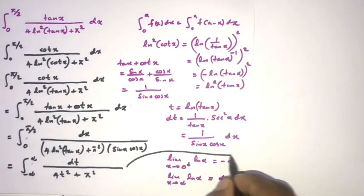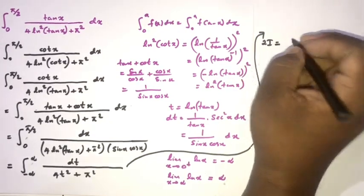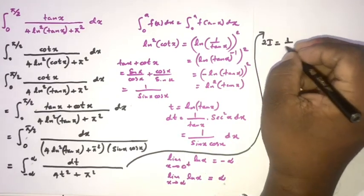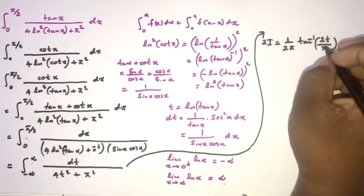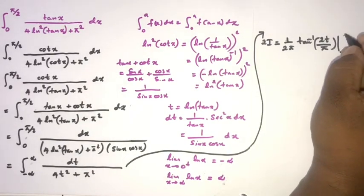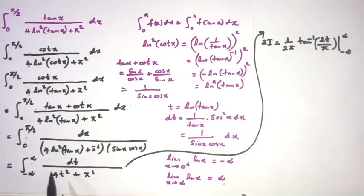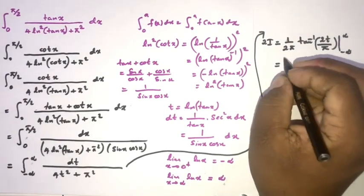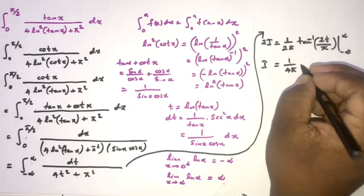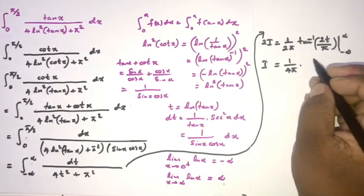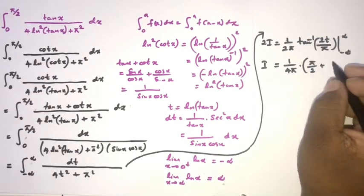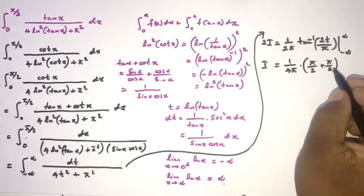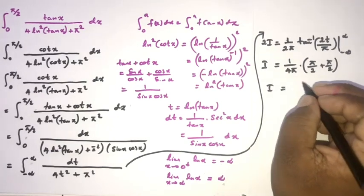This is a standard arctan integral. We get 2I = [1/(2π)]·arctan(2t/π) evaluated from −∞ to ∞. So I = [1/(4π)]·[arctan(∞) − arctan(−∞)] = [1/(4π)]·[π/2 + π/2] = [1/(4π)]·π = 1/4. Therefore I = 1/4.